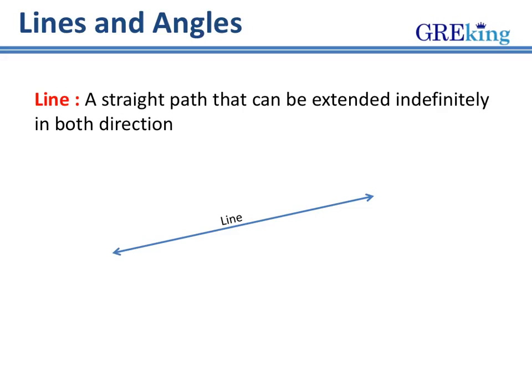Today we start with a course of geometry by understanding the simple concepts of lines and angles. What is a line? A straight path that can be extended indefinitely in both directions is called a line. The two arrows at the end of the line segment indicate that it is a line.